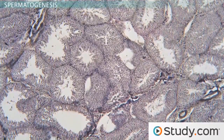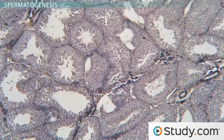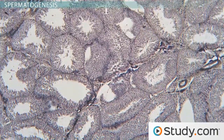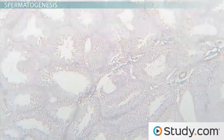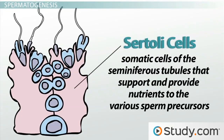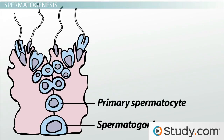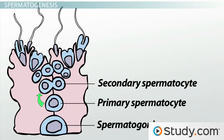Now let's see how all of this works in the context of the seminiferous tubules. As you can see from this highly magnified section, the testes are packed with seminiferous tubules, which produce millions of sperm and release them into the lumens of the tubules. The tubules are lined with an epithelial layer of Sertoli cells, which are somatic cells of the seminiferous tubules that support and provide nutrients to the various sperm precursors. The rapidly dividing spermatogonia are located at the base of the Sertoli cells. Often, when a spermatogonium divides by mitosis, one of the daughter cells will take a position between Sertoli cells and become a primary spermatocyte.